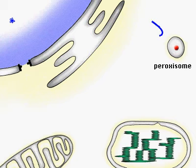Peroxisomal proteins also fold in the cytosol and then cross the peroxisome membrane into the organelle lumen.